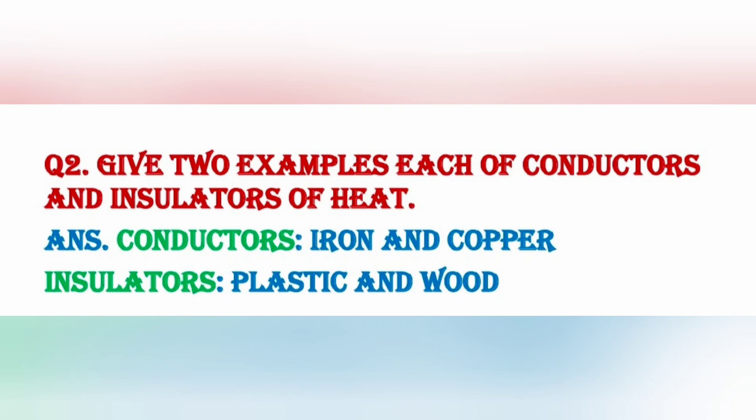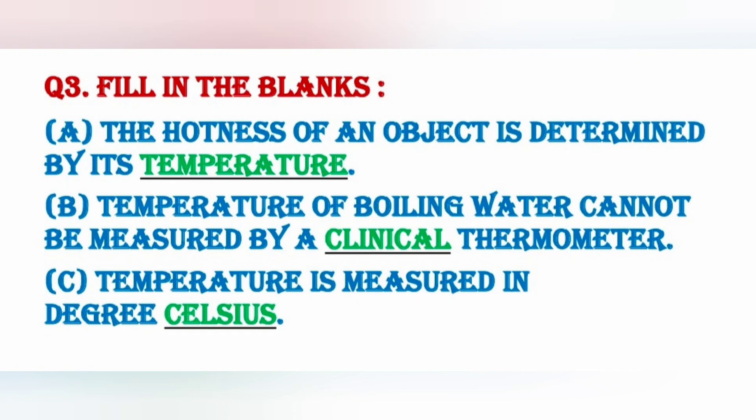Next question is fill in the blanks. A) The hotness of an object is determined by its temperature. किसी भी वस्तु की गर्मी उसके तापमान द्वारा निर्धारित होती है. B) The temperature of boiling water cannot be measured by a clinical thermometer, जो उबलते पानी का तापमान है उसे हम clinical thermometer से measure नहीं कर सकते.